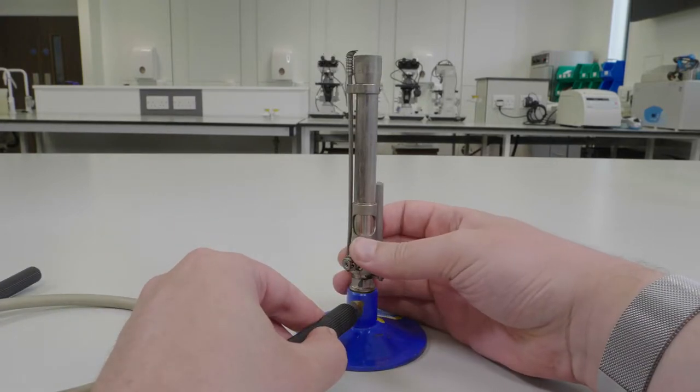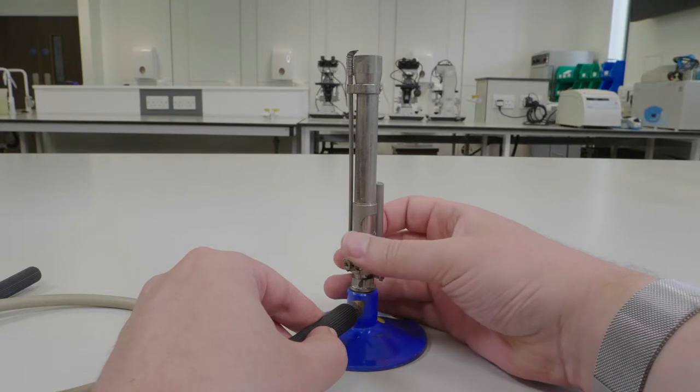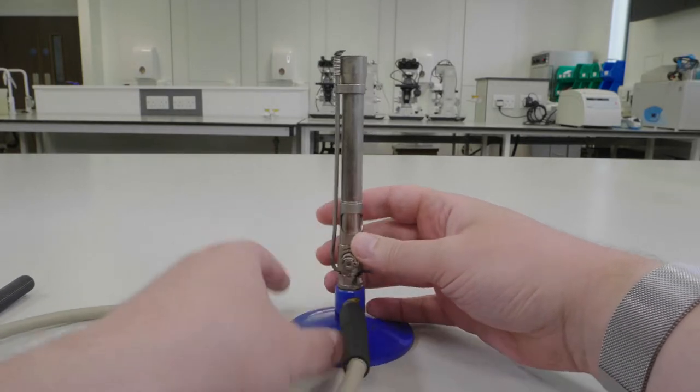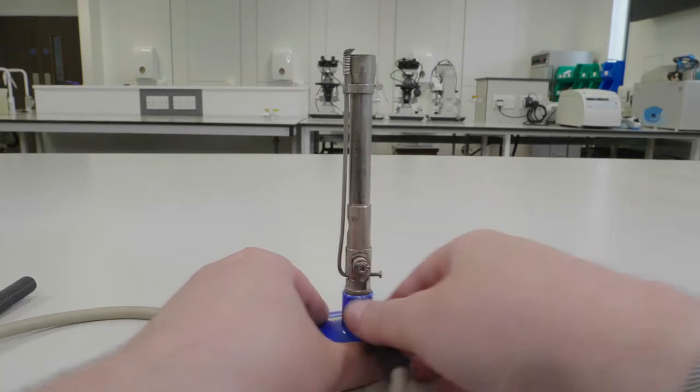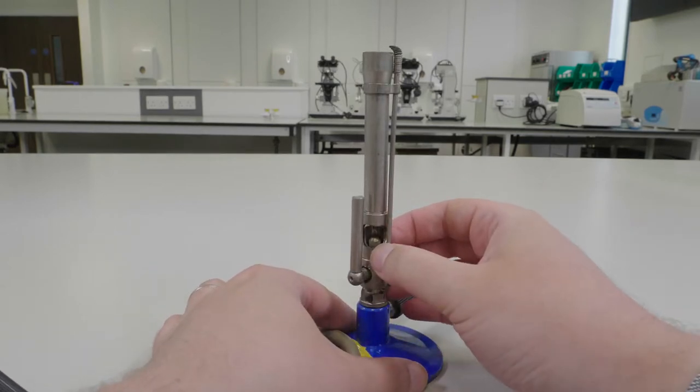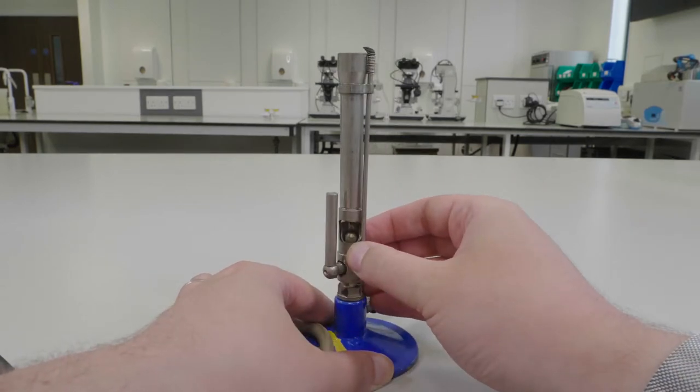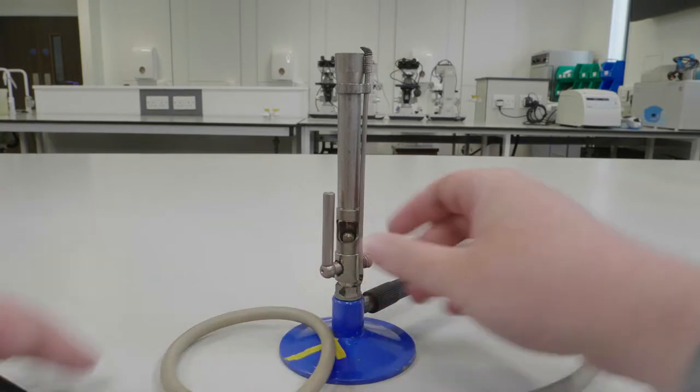Next we want to look at the collar at the bottom of the Bunsen. This controls the amount of oxygen mixing with the gas source and consequently controls the intensity of the flame generated. This will be important when we're lighting the Bunsen in a second.